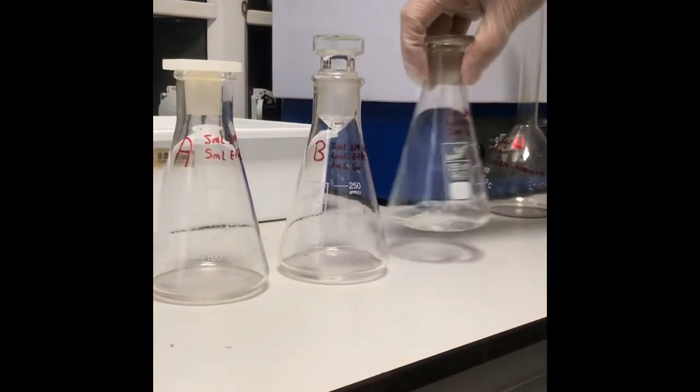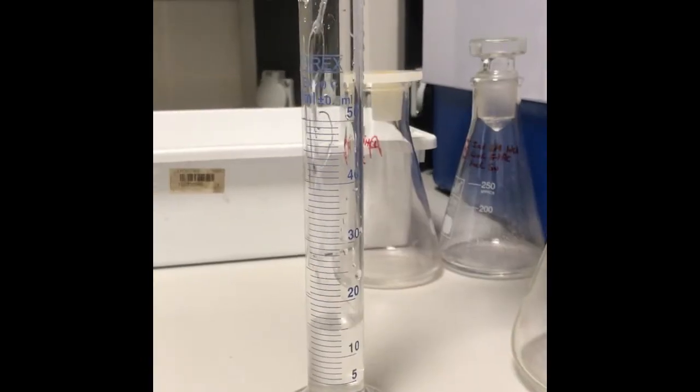Inside Erlenmeyer flask A: five milliliters hydrochloric acid solution and five milliliters ethyl acid.